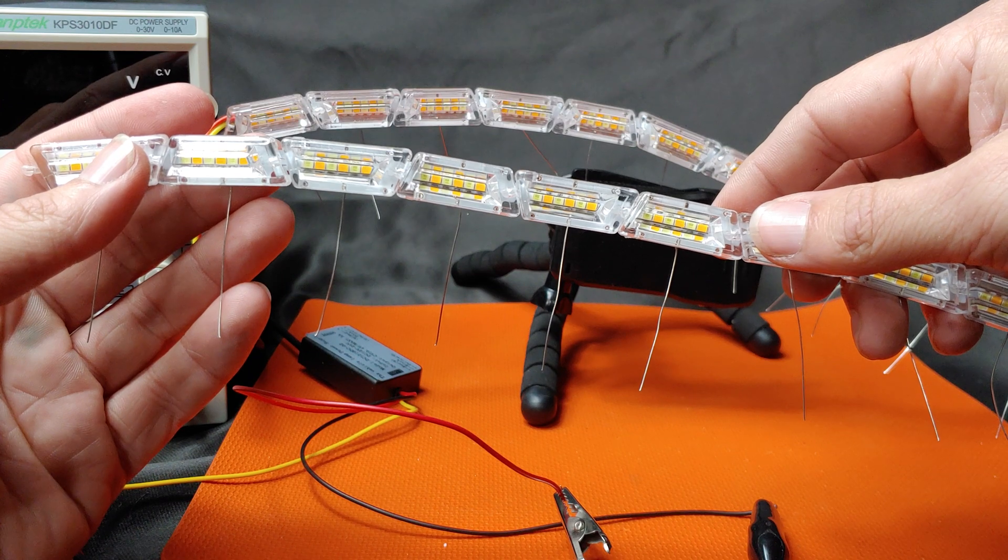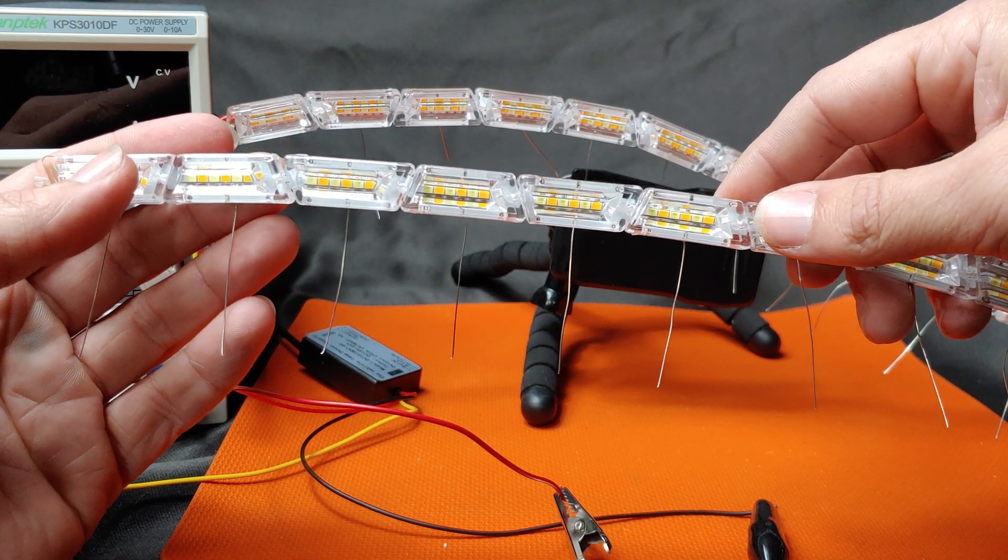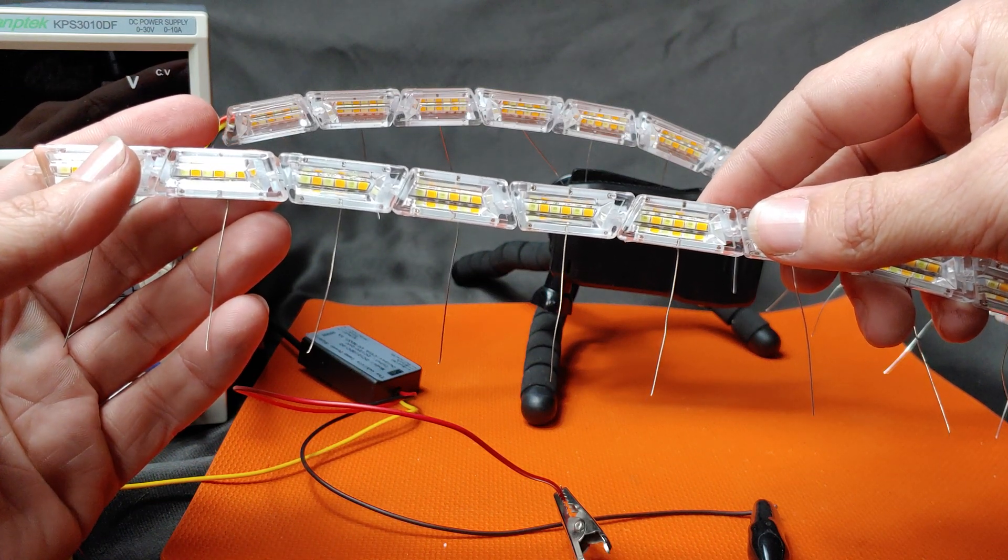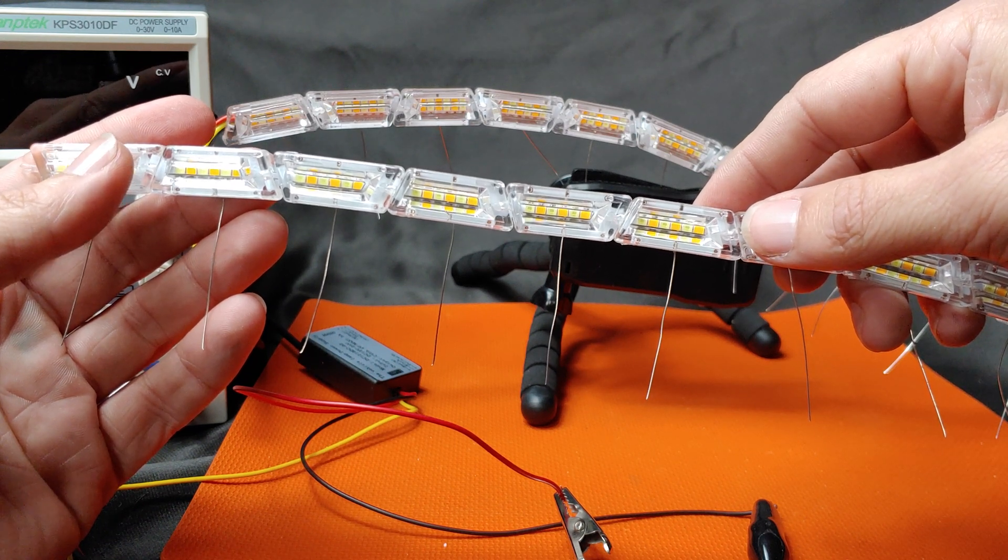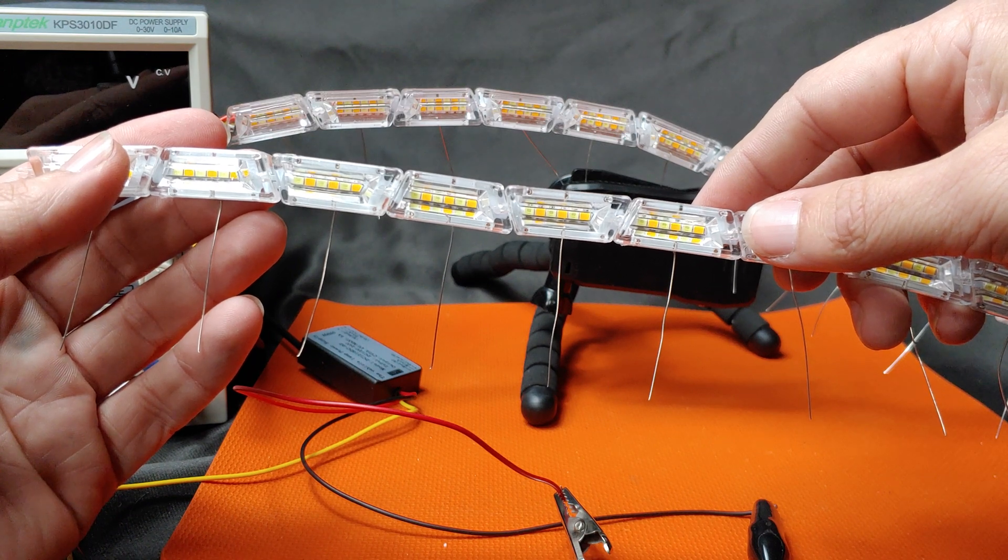Instead of looking at LED replacement headlight bulbs, we're going to take a look at an LED DRL. This LED DRL is a switchback style, which means it doubles as a turn signal, but it doesn't just do that. It has one more trick up its sleeve. It's a sequential turn signal.